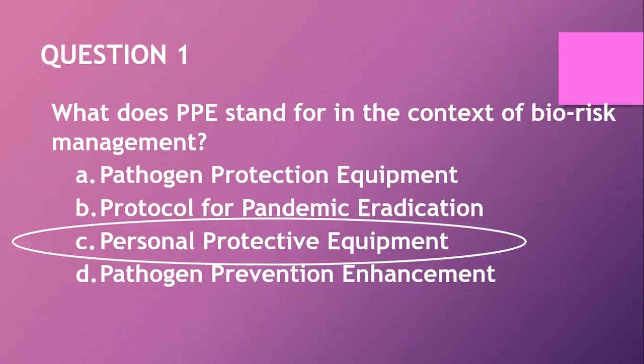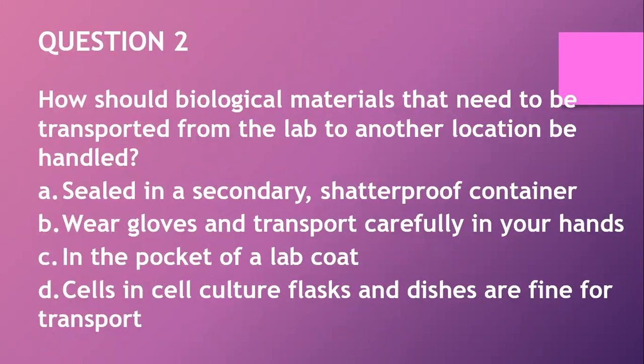Well done if you got that. Question two: how should biological materials that need to be transported from the laboratory location be handled? Remember you are trying to protect yourself, the person transporting it, and the biological material itself. A. Sealed in a secondary shatterproof container. B. Wear gloves and transport carefully in your hands. C. In the pocket of your lab coat — do not do that. D. Sealed in self-culture flasks for transport. The answer is A.